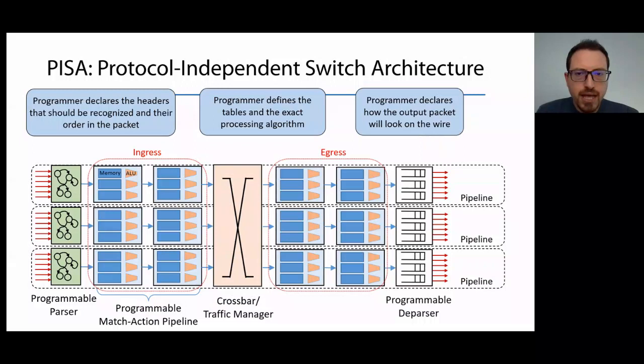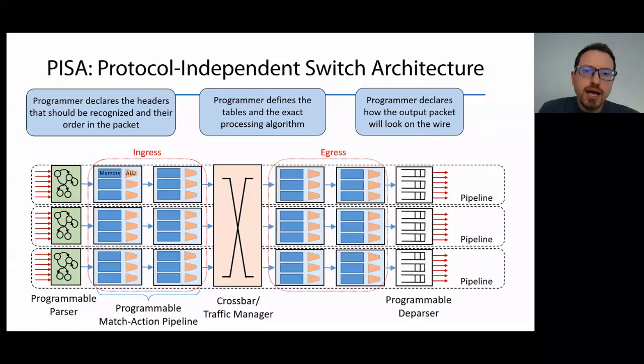An important constraint of this architecture is that line rate must always be guaranteed. Packets have a certain budget of clock cycles to be processed, and then they need to leave the switch. No packet can stall the pipeline and delay the following packets. This means that some complex processing logic, like very complicated network functions, will not fit in the budget.